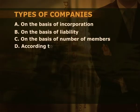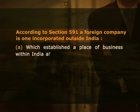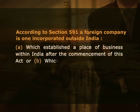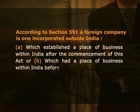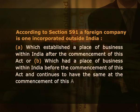According to domicile. First, foreign company: it means a company incorporated outside India and having a place of business in India. According to section 591, a foreign company is one incorporated outside India which established a place of business within India after the commencement of this act, or which had a place of business within India before the commencement of this act and continues to have the same at the commencement of this act. Next, Indian companies: a company formed and registered in India is known as an Indian company.